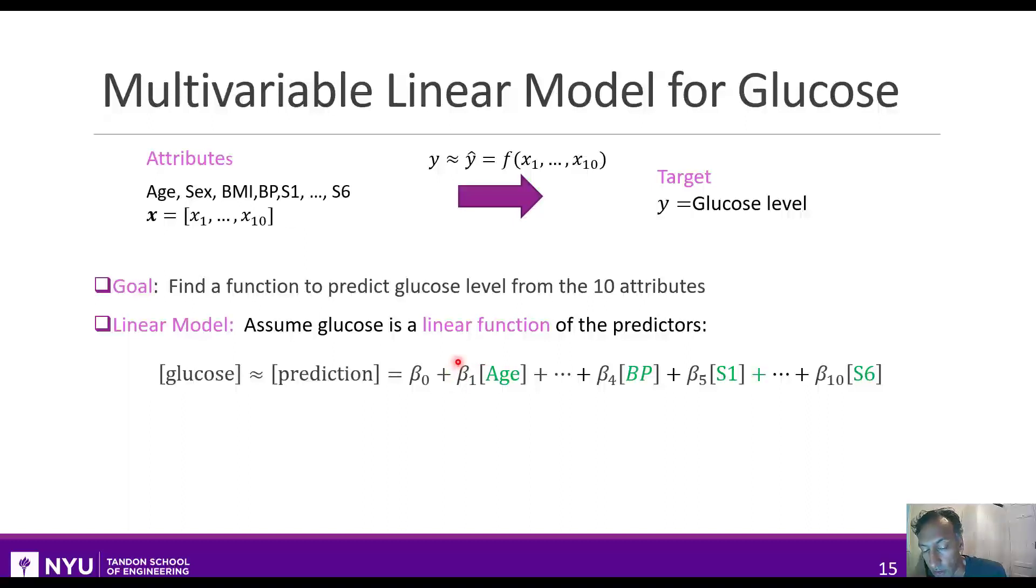The prediction is some offset plus a linear weighting of each of the 10 attributes. We'll call those variables beta. So it'll be beta_1 times the age, beta_4 times the blood pressure, beta_5 times the first blood measurement, and so on. More generally, if y is our target, y-hat is our prediction, we have an intercept and then the linear combination of the features x_1 to x_10.